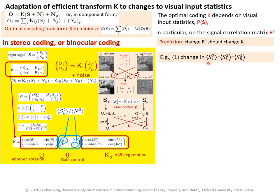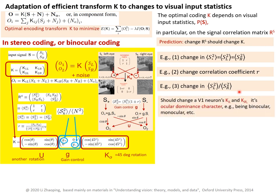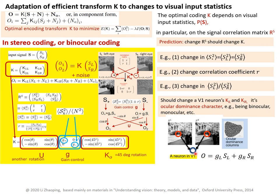For instance, we could change the signal powers in the left and right eyes in the correlation matrix. We could also change the correlation coefficient R. We might even consider that the two signal powers in the left and right eyes may not be equal — the ratio may not be one in abnormal situations. These changes will then be manifested in changes in the coding K — in particular, the sensitivity for each neuron and the ocular dominance of a neuron, whether it's binocular or monocular. These changes will also be manifested in ocular dominance columns seen in experimental data.